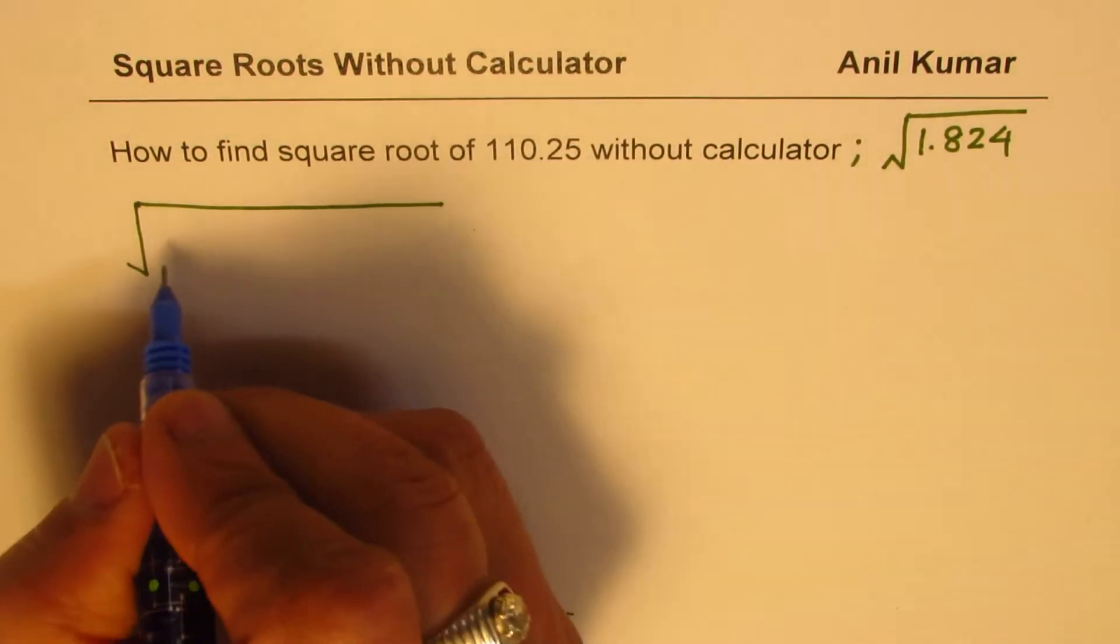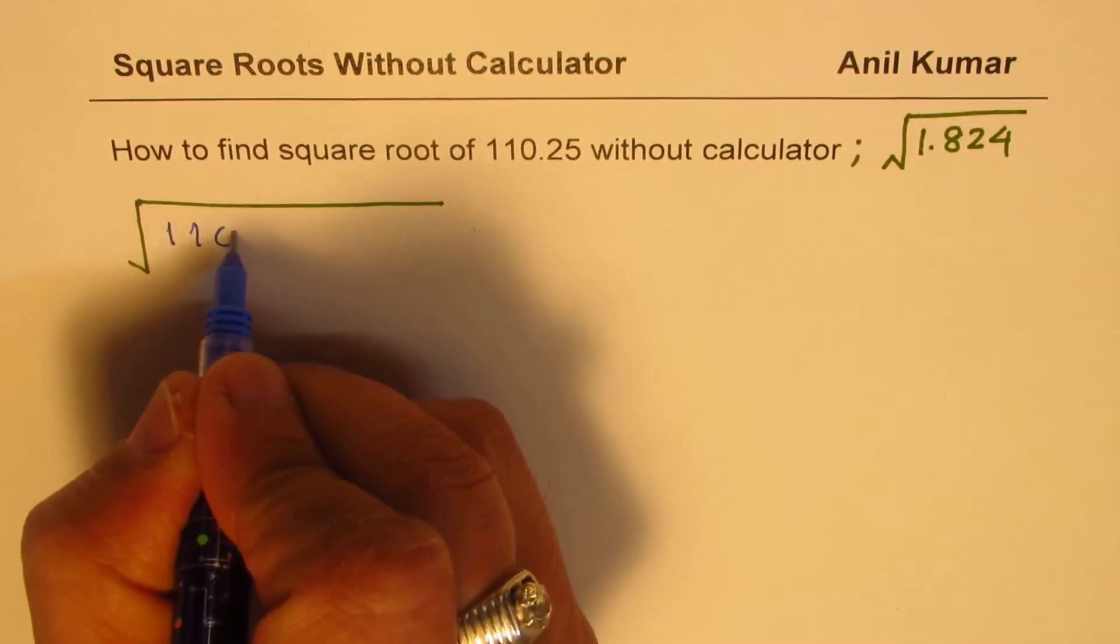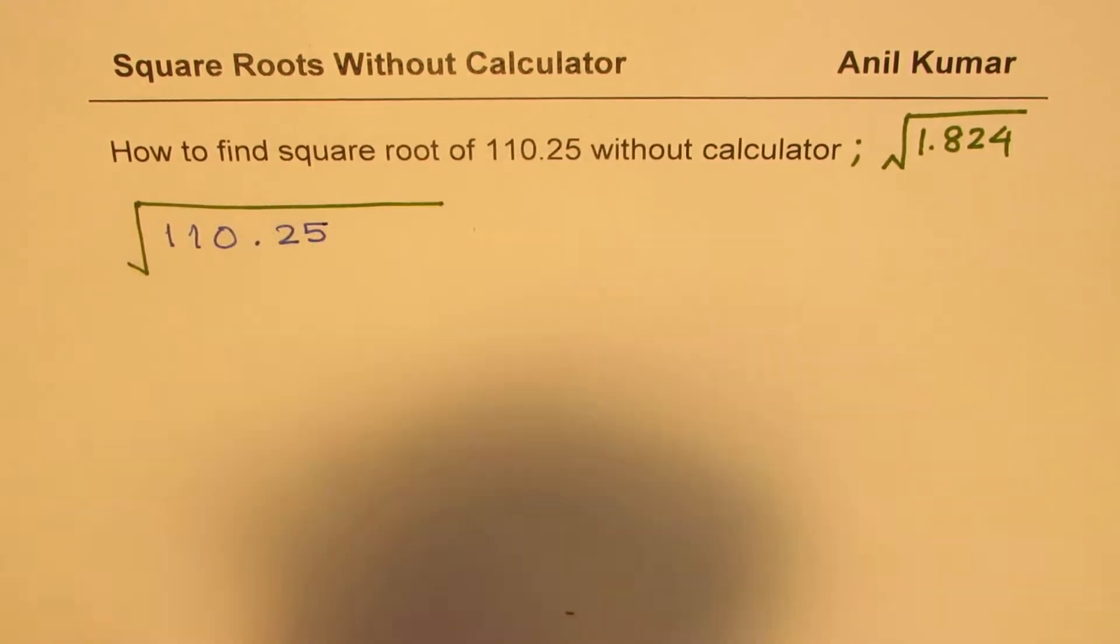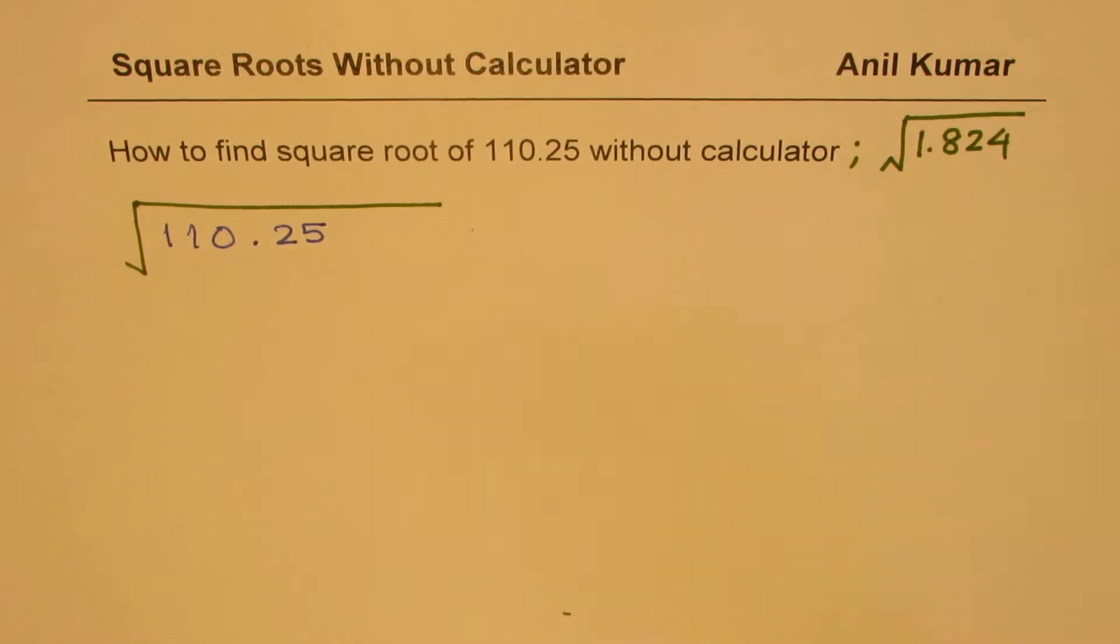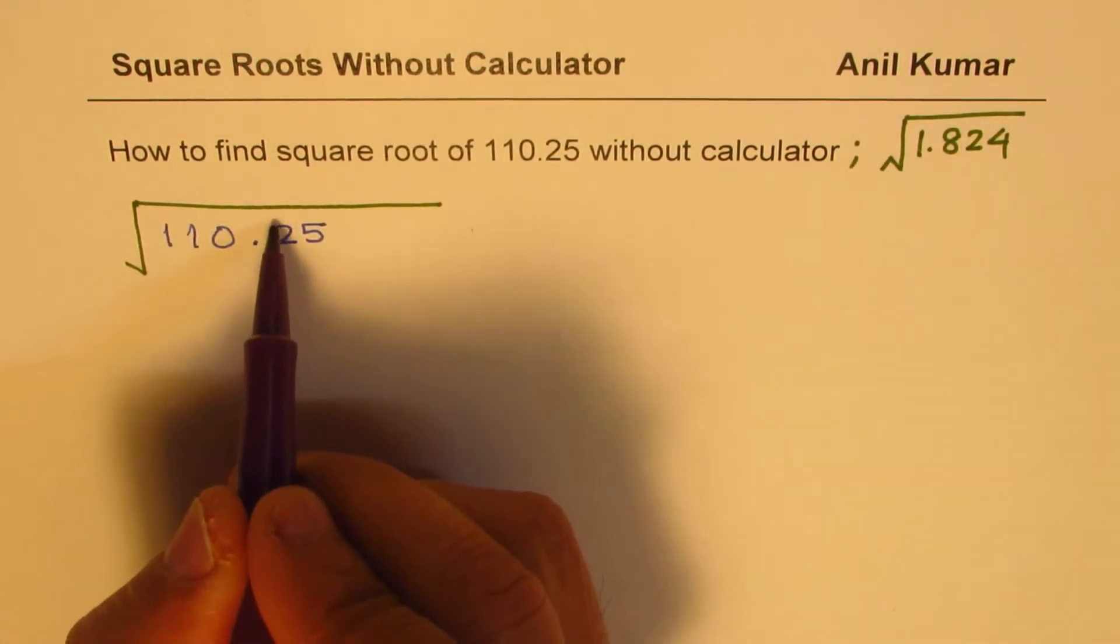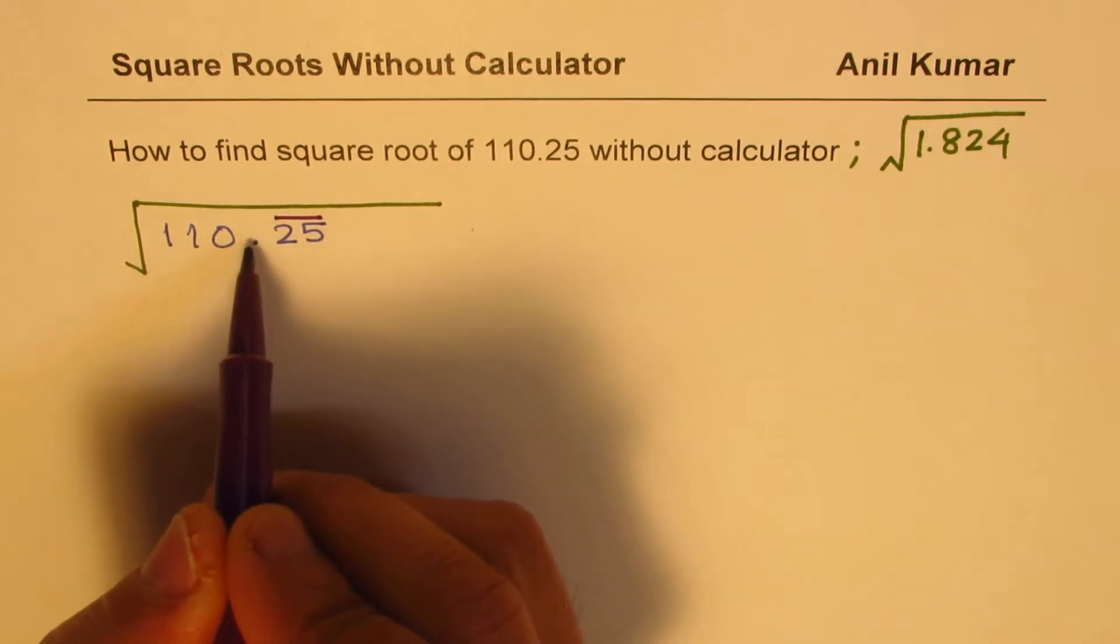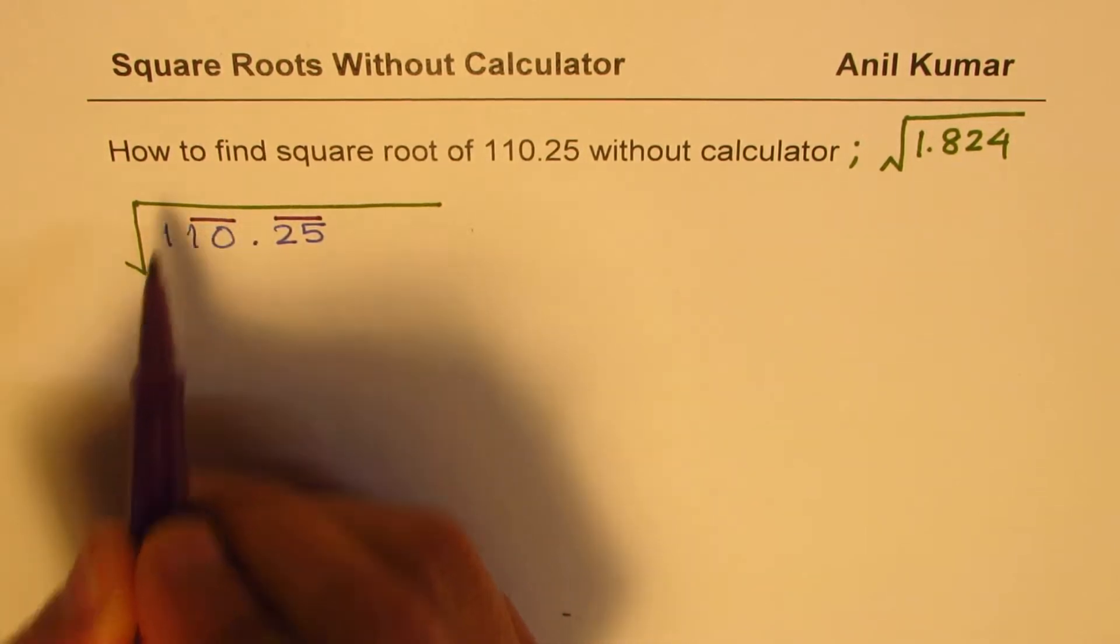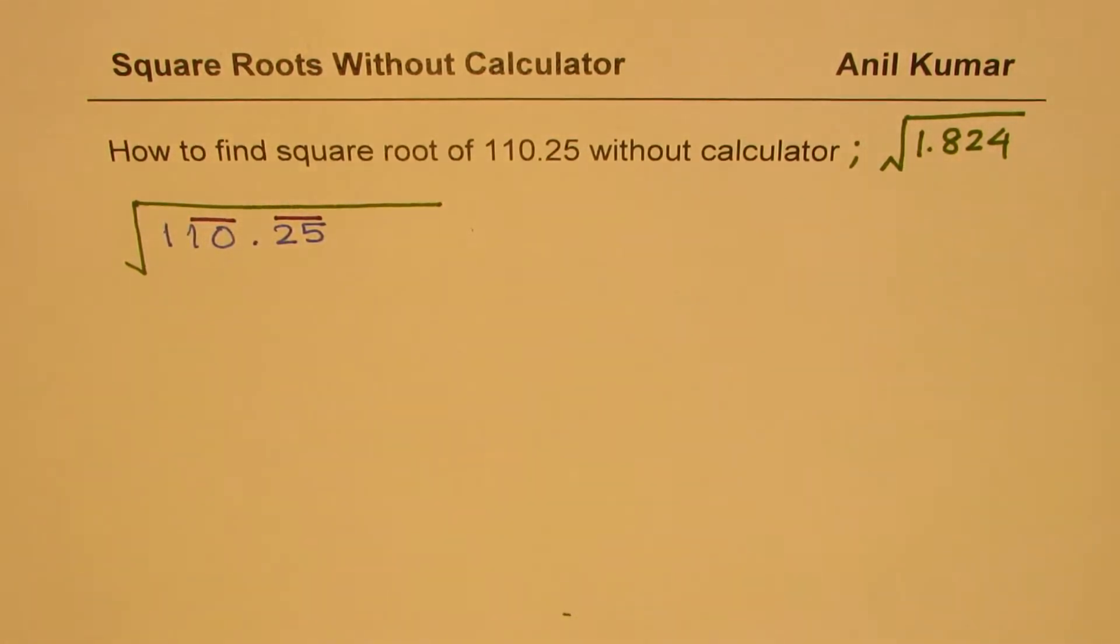So let me rewrite this number which is 110.25. So we make sets of 2s going away from the decimal point. So this is the decimal point. You go right sets of 2s, go left sets of 2s.